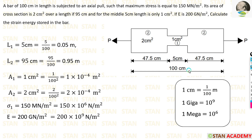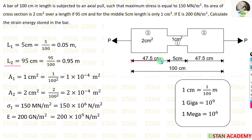L1 is 5 centimeter. We need to convert it into meter: 1 centimeter equals 1 by 100 meter, so 5 by 100 gives 0.05 meter. The remaining portion is L2. We have 47.5 centimeter on each side, totalling 95 centimeter — or equivalently 100 minus 5. So 95 by 100 gives us 0.95 meter.